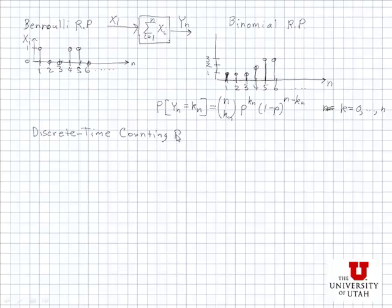And a counting process is going to be defined as follows. So we're going to say a random process, y sub n, is a discrete time counting process if it has these three properties.